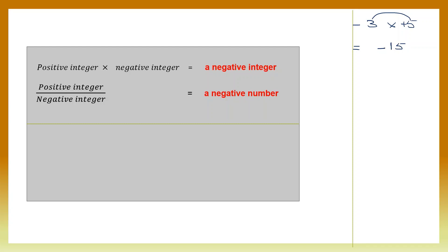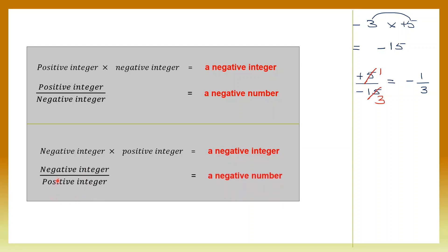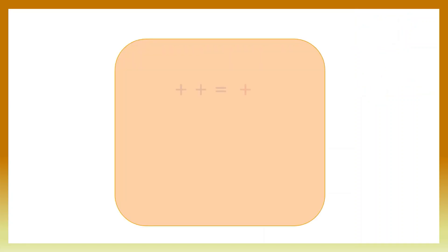Similarly, when you divide a positive integer by a negative integer, your answer is a negative number. Take positive 5 divided by negative 15 — your answer is negative. We can cancel 5 and 15: 5 ones are 5, 5 threes are 15, so we get minus 1 by 3. Again, if the signs are different — negative into positive, your answer is negative. Similarly, when you divide a negative integer by a positive integer, your answer is a negative number.